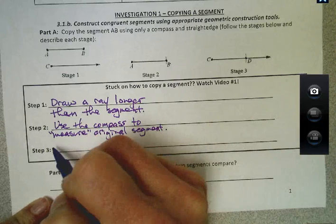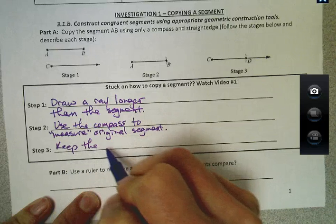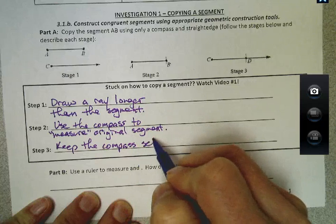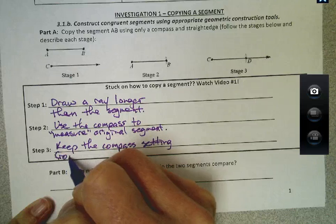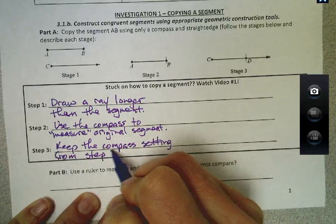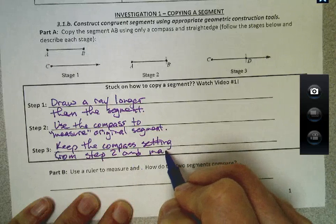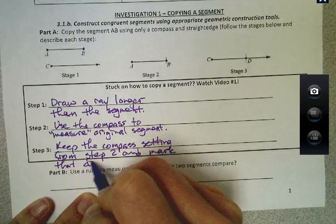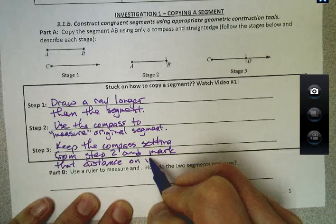And then our last step is we're going to keep the compass setting from step 2 and mark that distance on your ray.